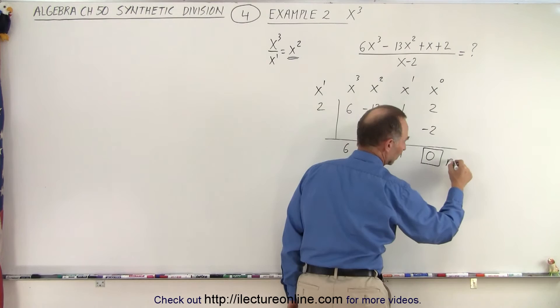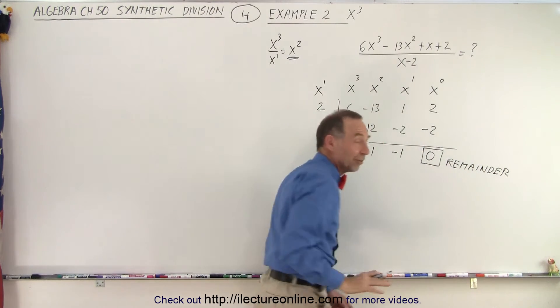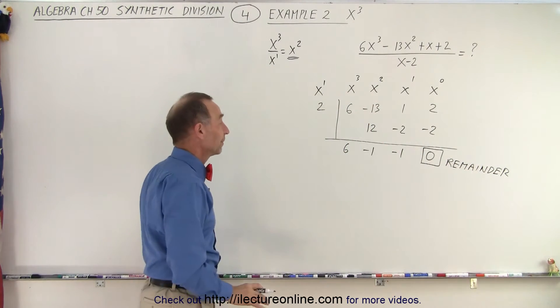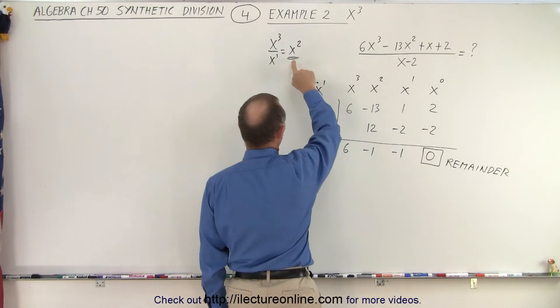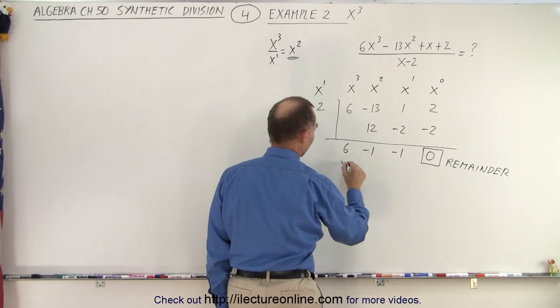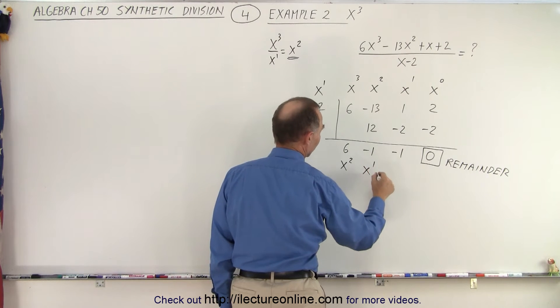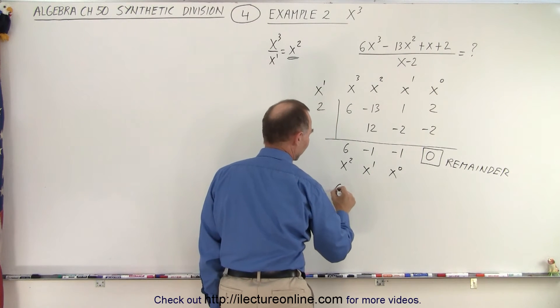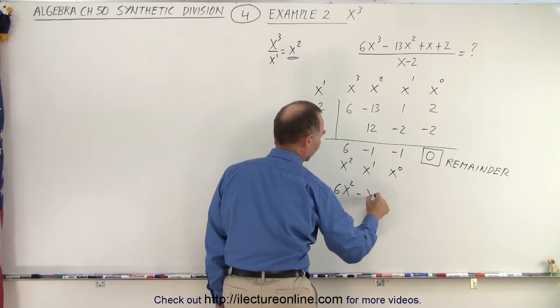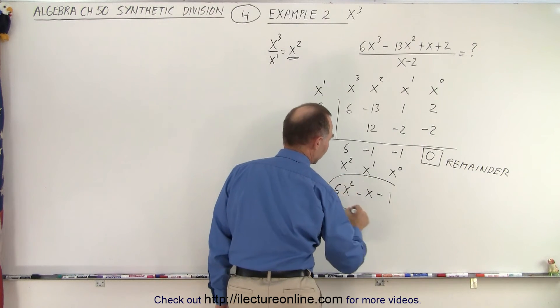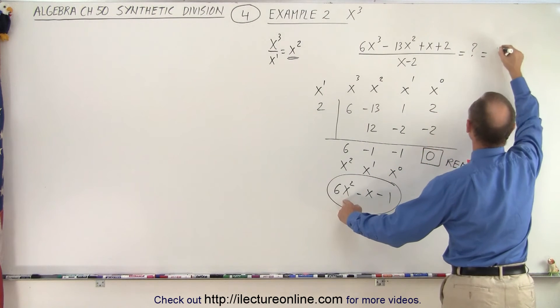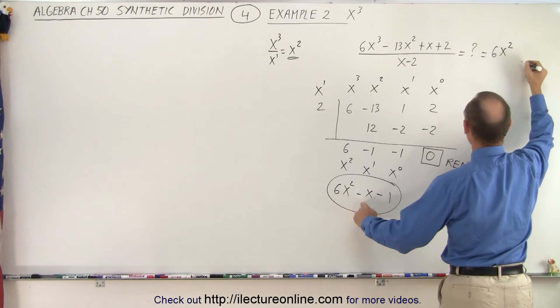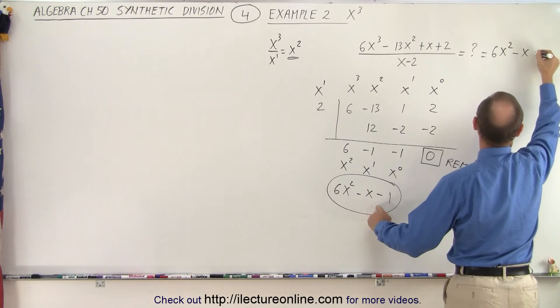Notice that this is the remainder, which means in this case there is no remainder. Remember that now we have three terms in the solution and the first term starts as an x squared. So this is associated with x squared, x to the first power, x to the zero power. That means that we have 6x² - x - 1 as the solution to our division. So this can be written as 6x² - x - 1.